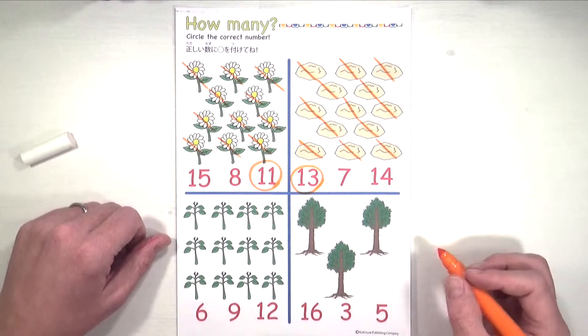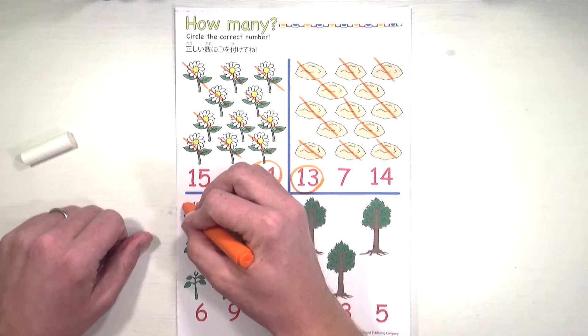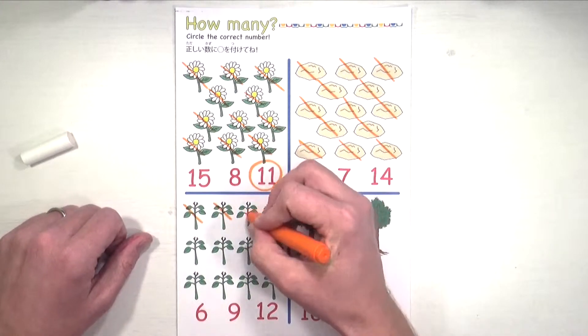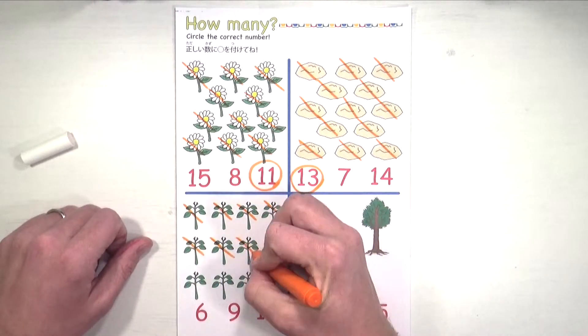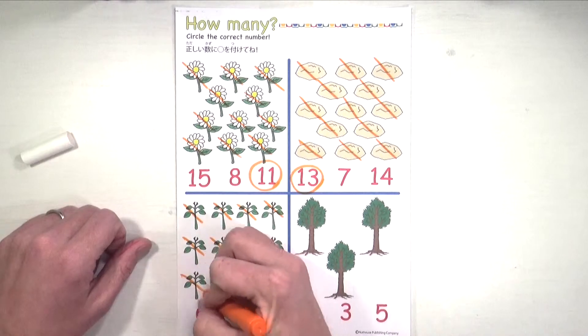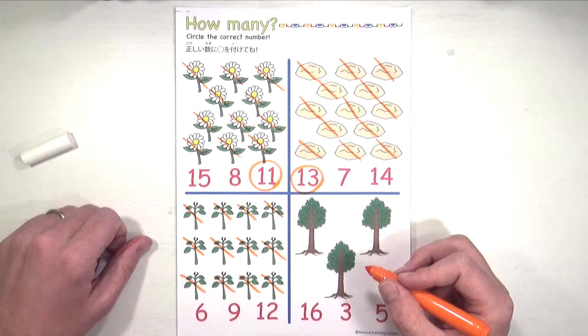Let's go on to the plants. How many plants are there? Let's count. Here we go. One, two, three, four, five, six, seven, eight, nine, ten, eleven, twelve. Twelve plants.